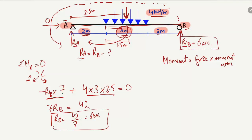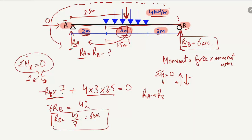Now we need to find RA. We can use the summation of vertical forces equal to zero. Upward forces are taken as positive and downward forces as negative. RA and RB are both positive since they act upward. The distributed load of 4 kN/m over 3 m is negative. So: RA plus RB minus 4 times 3 equals zero.